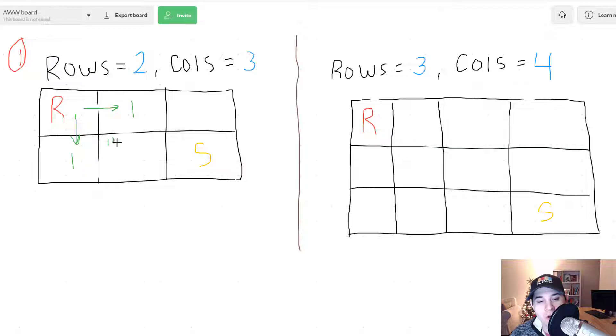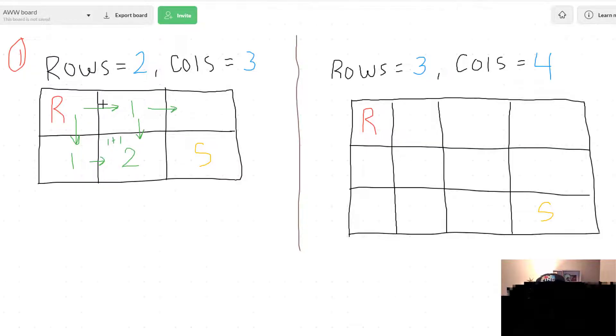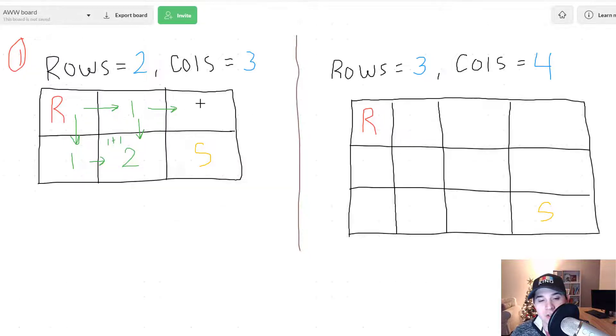So this box would just be one plus one. So that's two because we have one path going right here and one path going right here. And then let's say we look at this box up here. Above us there's nothing but to the right of us we have a one. So there's only one unique path to get to this box right here because above us that's just zero. So this would just be one plus zero and that's one unique path.